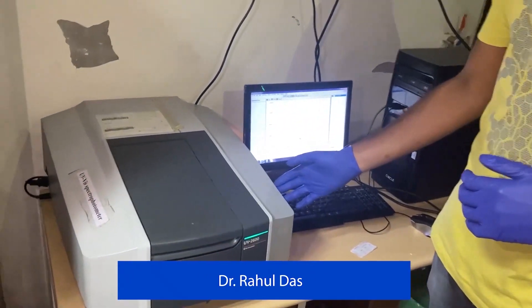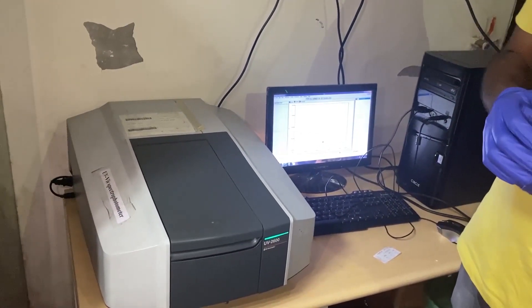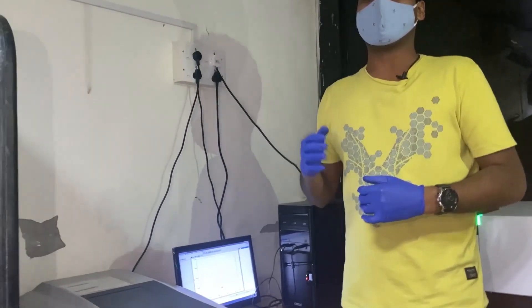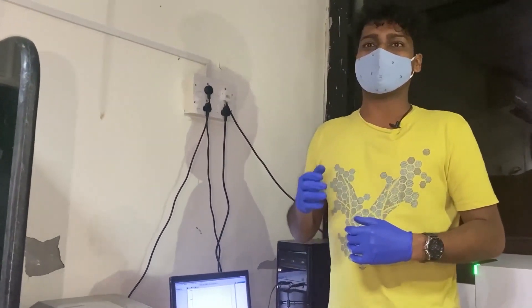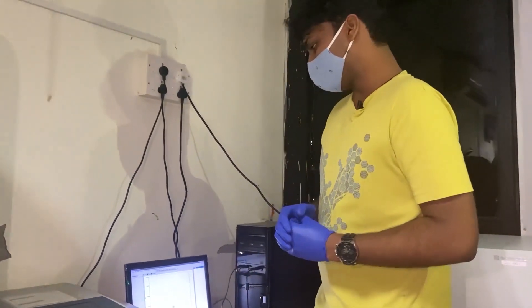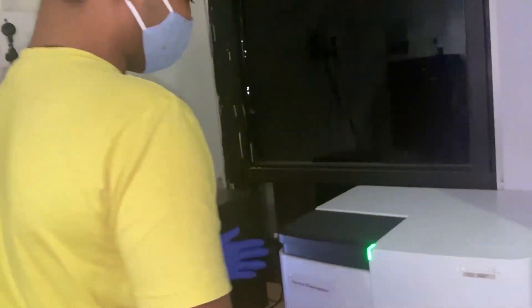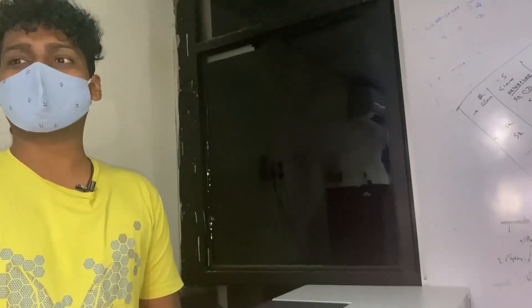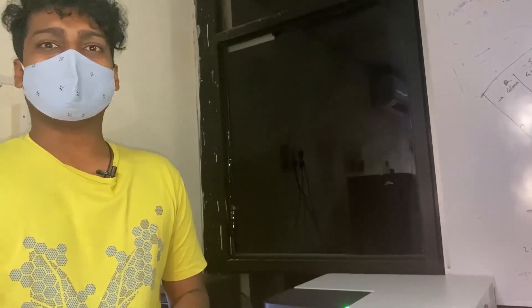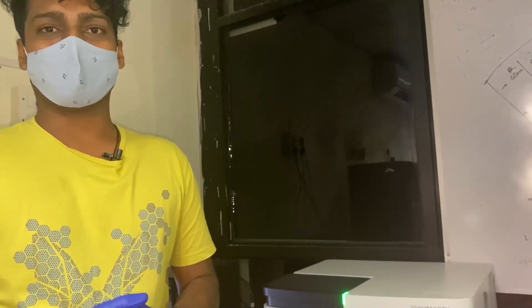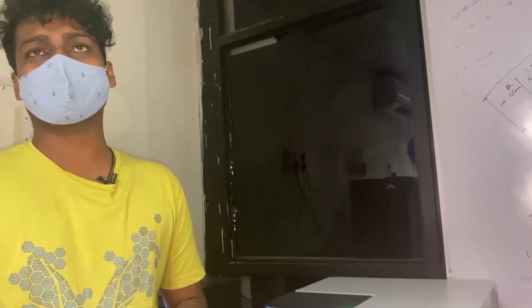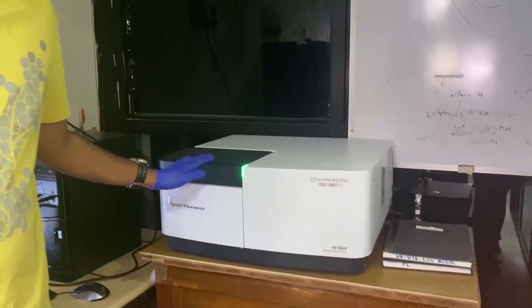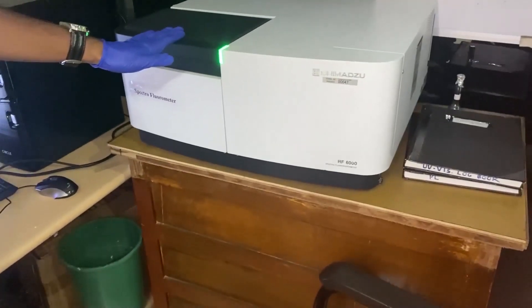Hello everyone. This is Dr. Rahul Kumar Das from NEMO Lab. Right now what you are visualizing is a UV instrument, which is normally used to trace the absorbance of any material or molecule dispersed in a solvent, or it can be used directly with solid samples. Moving on to the next instrument, what we have is a spectrofluorometer. We particularly try to sense and test the fluorescence of any sample. The fluorescence property is very important to differentiate between molecules and materials. This instrument has a range of excitation in the UV as well as the visible range.